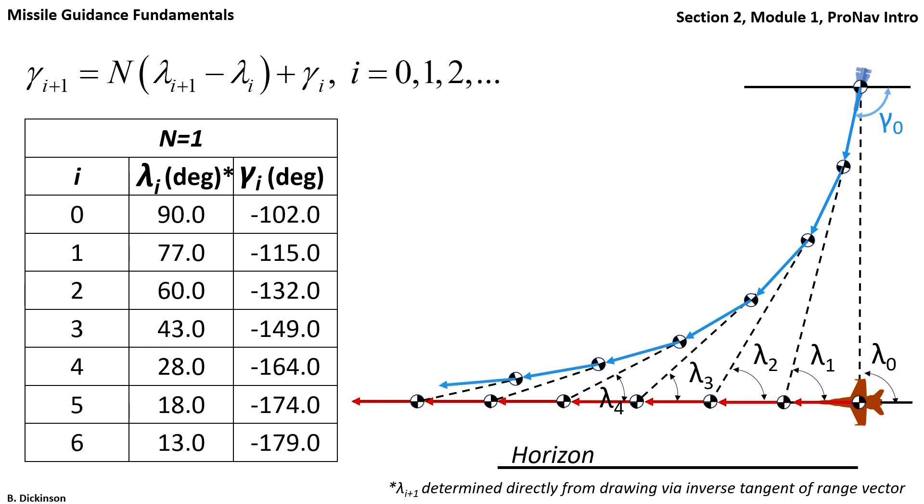Does this lead to a collision? Well, it's hard to tell. We see the pursuer closing the distance with the target. But note that at time t six, the pursuer is slightly behind the target. The engagement appears to turn into a tail chase. And in fact, that's exactly what's happening here. And it occurs for this choice of n equal to one. So only if the pursuer has a velocity advantage over the target will collision occur for a tail chase scenario.